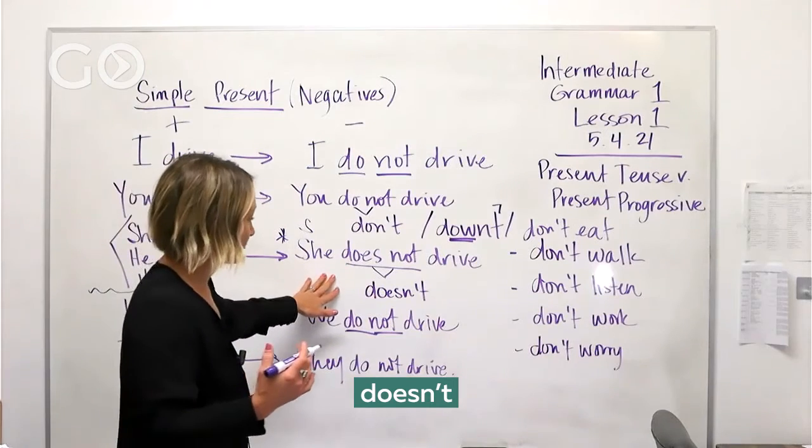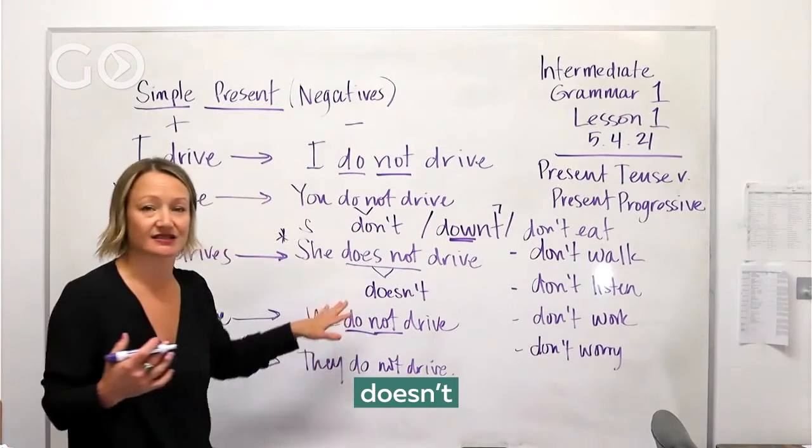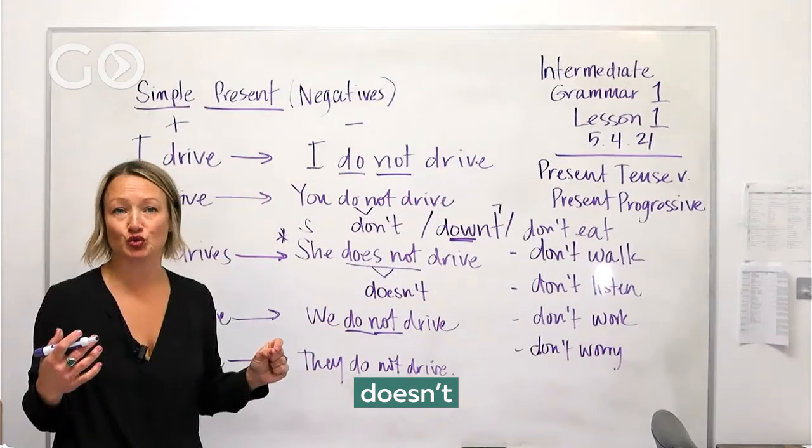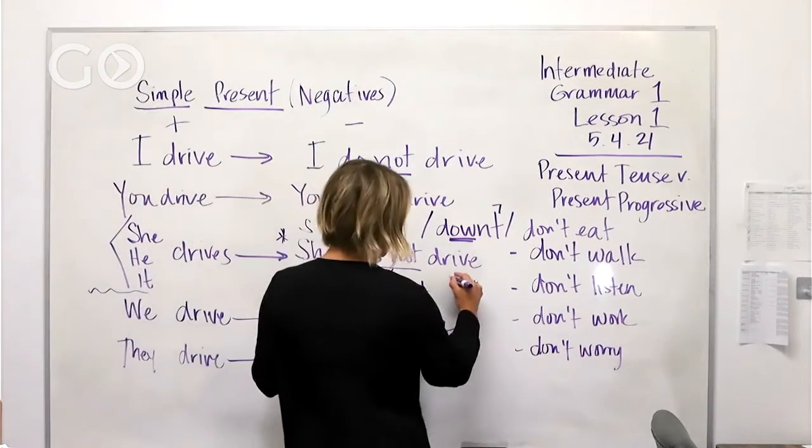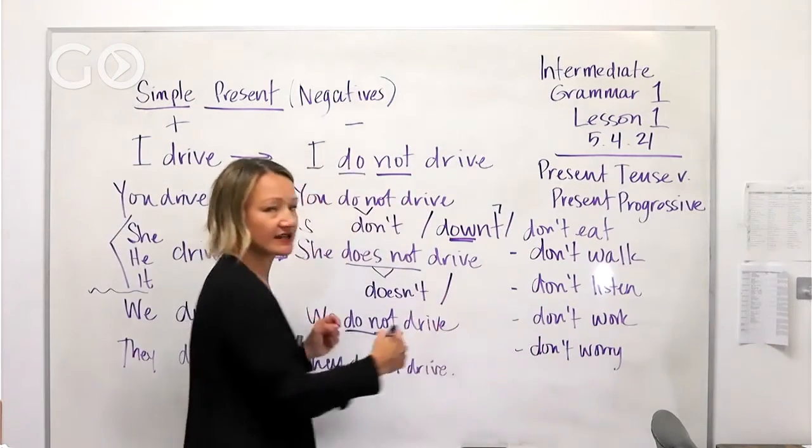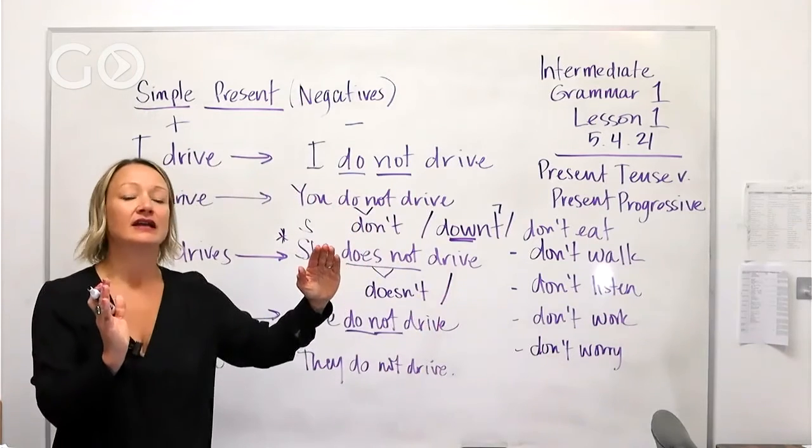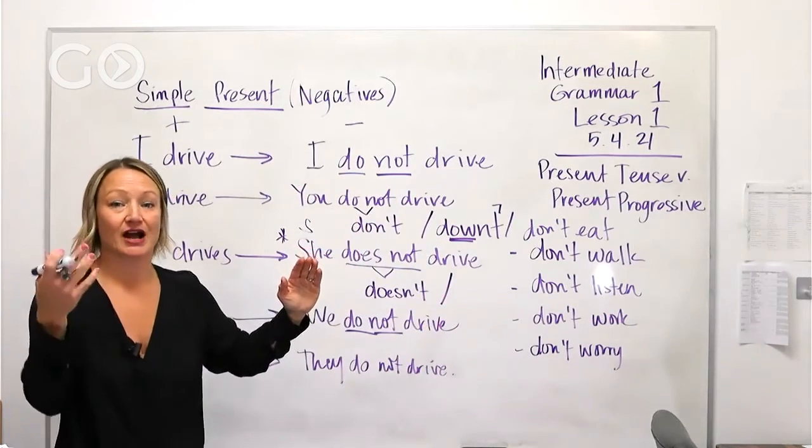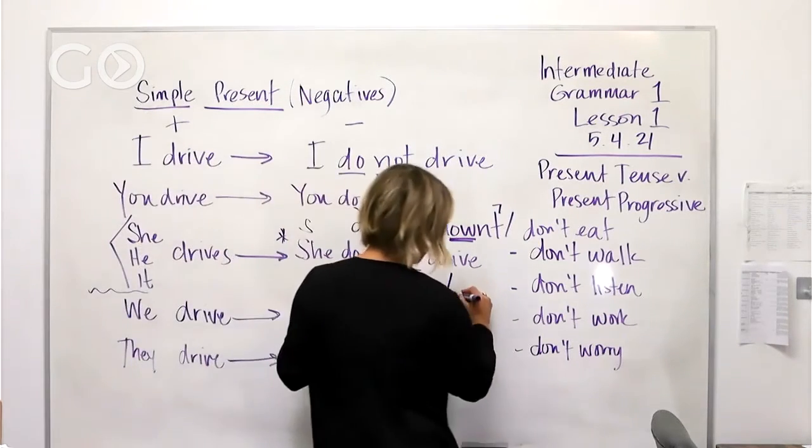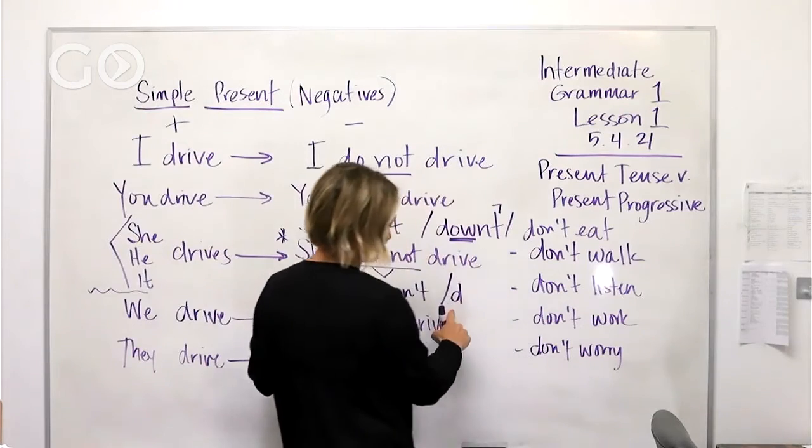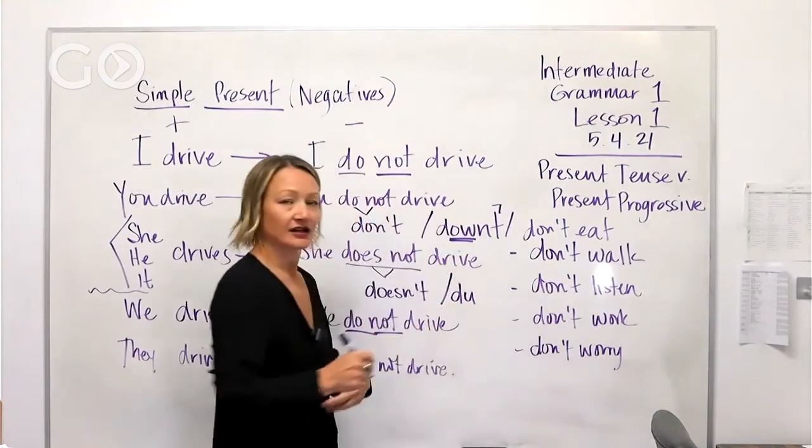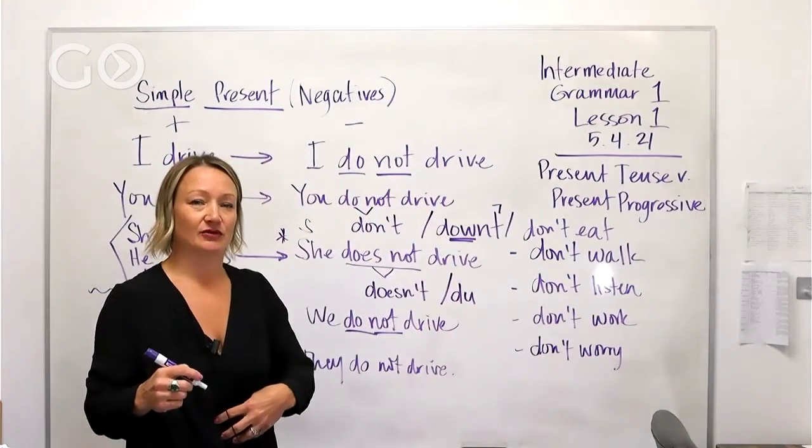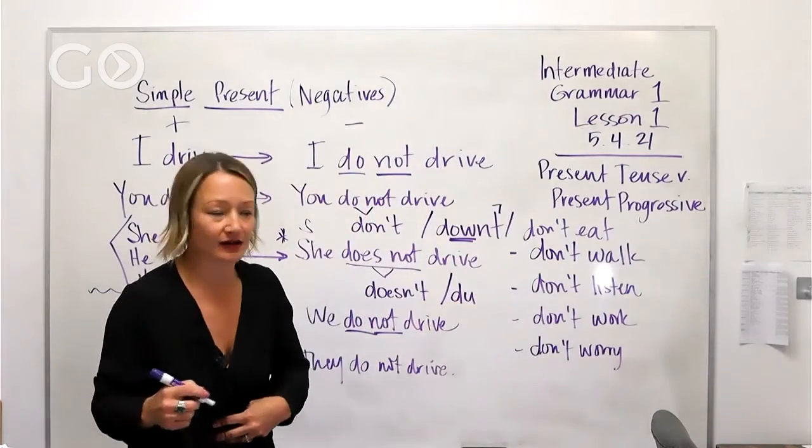And then back to this one - the pronunciation for 'doesn't.' It's not 'do,' it's not 'doe,' it's 'duh.' So when I write things like this with the lines that are slanted, it means the pronunciation or how it sounds. So what we're going to make here is 'duh' - that's the first sound here. The next is 'uh.' I always say it sounds like when you get punched in the stomach - 'uh,' 'duh.'